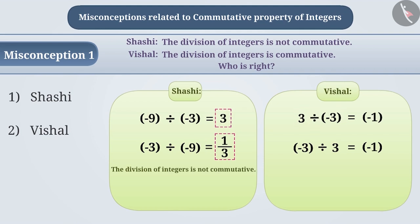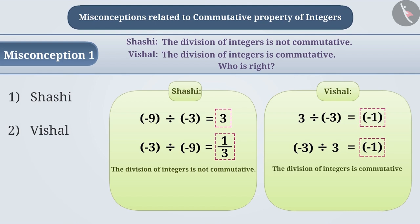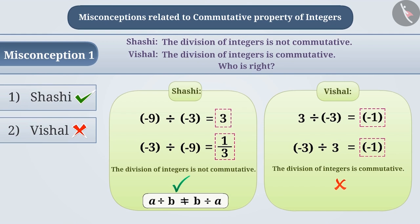Vishal got the result minus 1 by dividing 3 by minus 3. Similarly, by dividing minus 3 by 3, he again got the result minus 1. In both cases the result was equal, so Vishal believed his understanding was proven right that division of integers is commutative. But this is a misconception. Vishal's mistake was that he did not analyze other situations of division of integers. The correct understanding is that division of integers is not commutative because, in certain cases, the result obtained by dividing two integers is not always equal to the result obtained by changing the order. So Vishal is wrong and Shashi is right.